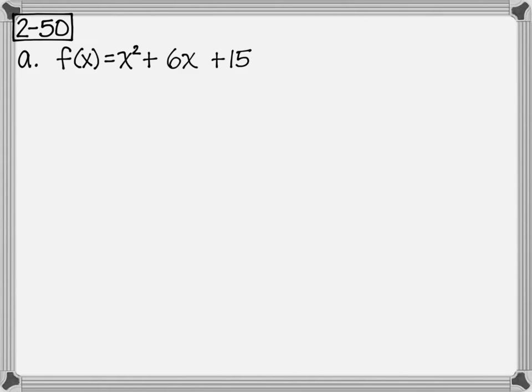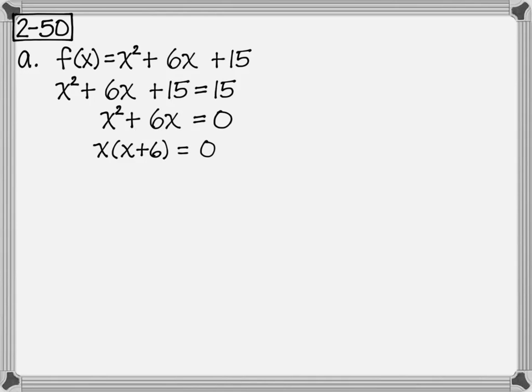And now for one more problem to show in 2 dash 50, I'm just going to do part a. You can ask for the other parts in class, or you can email me, and I can give you that information. But we've got this function, x squared plus 6x plus 15. Remember that this is the y-intercept, so we're going to set it equal to the y-intercept. And then we're going to solve by subtracting 15 from both sides, factoring, find our x sub 1 and x sub 2, find the midpoint between x sub 1 and x sub 2, and that would be negative 3.